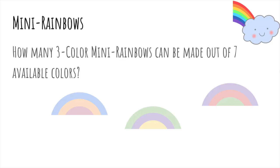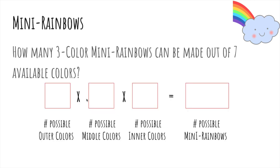So how many three-color mini-rainbows can be made out of seven available colors? Here are some examples. We'll choose an outer color, then a middle, and an inner color. So the number of ways we can do so is 7 times 6 times 5. And so the number of possible mini-rainbows is 210, because order matters.